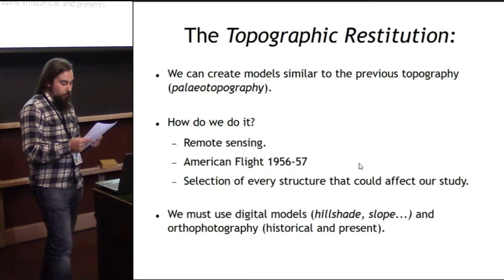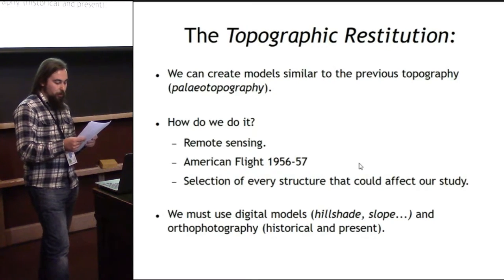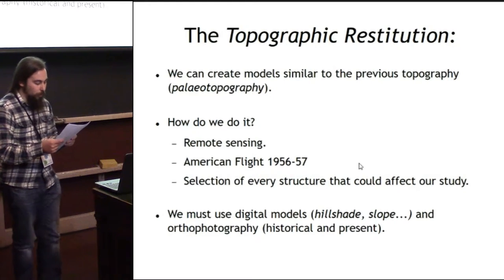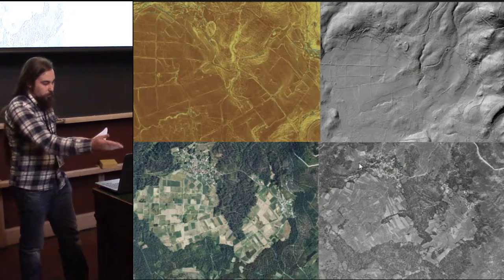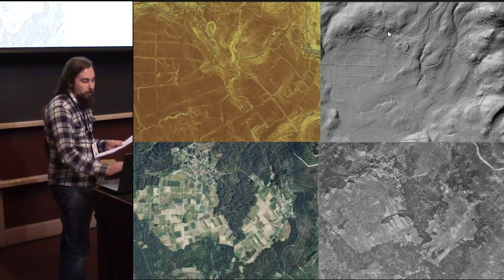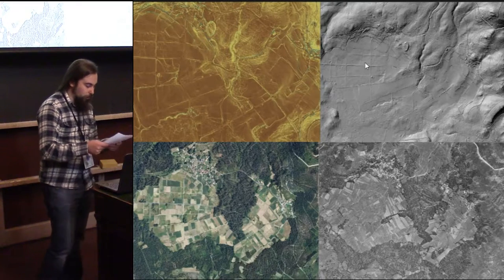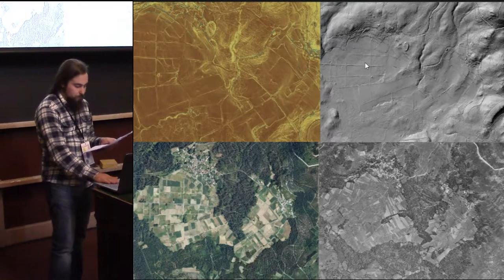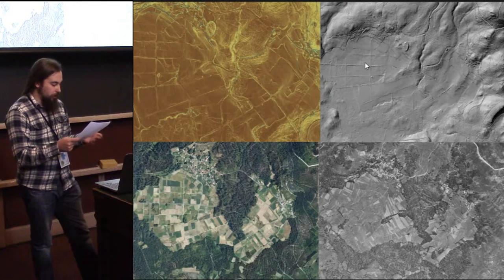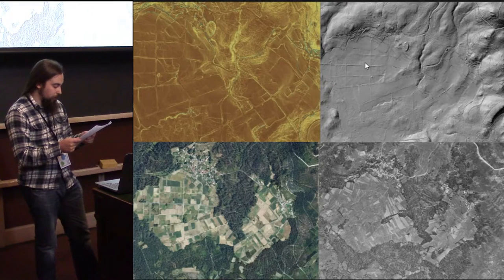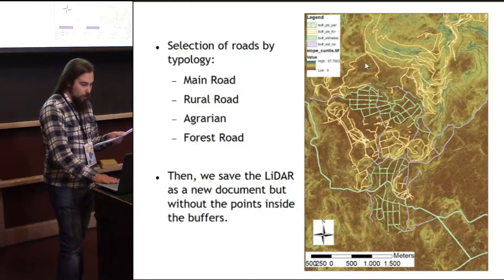To identify them, we use shaded relief models such as hillshade, slope models, or orthophotos — current and historical — especially the 1956 and 1957 series known as Vuelo Americano B or American Flight B. Here is the same area with different models and different orthophotos where you can see all the differences between them. Using the four images, we can see how the landscape has changed in recent decades, allowing us to determine which elements are more recent or modern and which we should erase or maintain on digital terrain models.